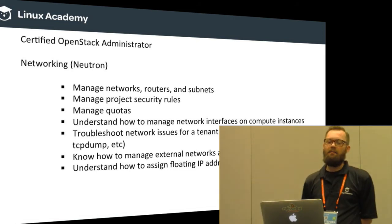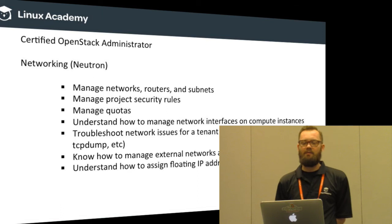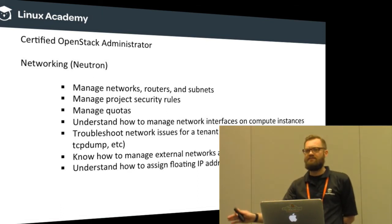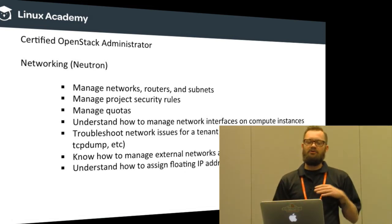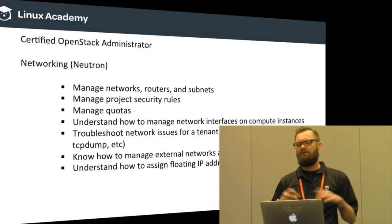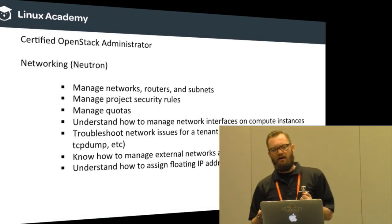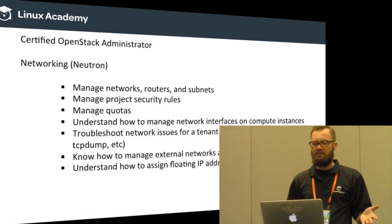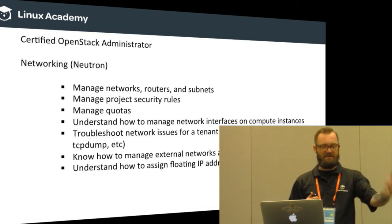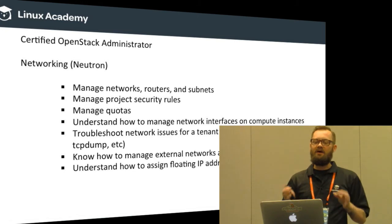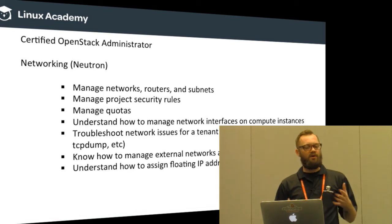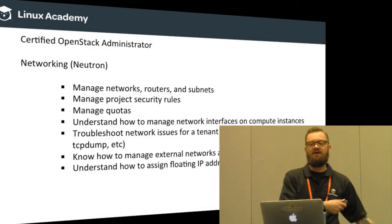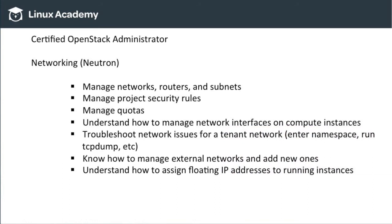For Networking Neutron, this is going to take a lot of your time — I would say roughly 15% to 20% of the exam. Nova and Neutron are going to be your two biggest percentages for passing. You need to know how to manage security rules and quotas — for example, how many subnets can I allow a tenant to use. You need to manage network interfaces on compute instances and know how to troubleshoot network issues for the tenant network, including entering the namespace on the virtualization side and running TCP dump to examine the virtual network.